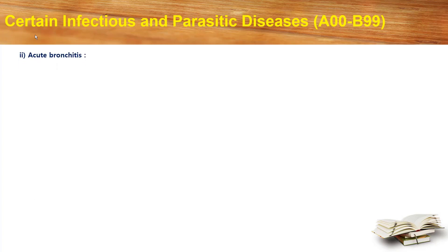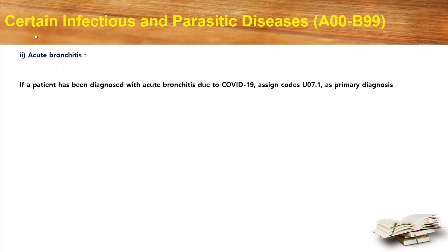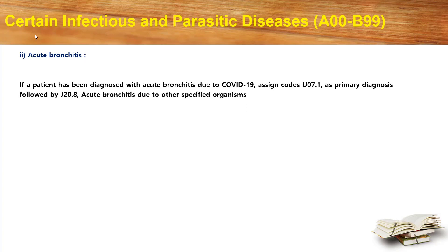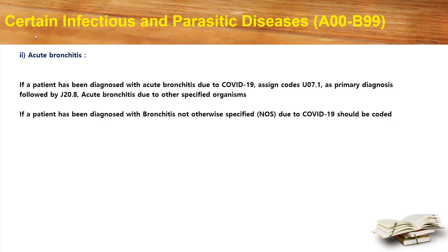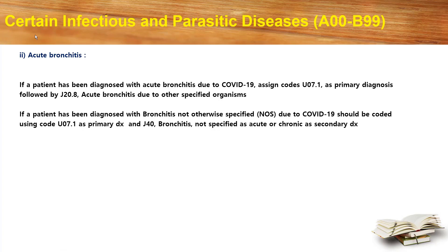Let's move into acute bronchitis. If a patient has been diagnosed with acute bronchitis due to COVID-19, assign code U07.1 as primary diagnosis followed by the code J20.8, that is acute bronchitis due to other specified organisms. If a patient is diagnosed with bronchitis not otherwise specified (NOS) due to COVID-19, code using U07.1 as primary diagnosis and J40, bronchitis not otherwise specified, as secondary diagnosis.